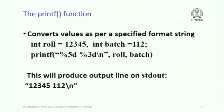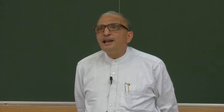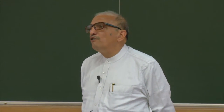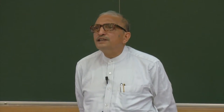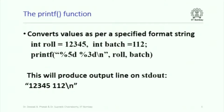Let us also discuss two functions used to analyze text input in a formatted fashion and to create formatted output. These are the traditional functions from the C programming language which continue to exist in C++. The C programming language did not have any input/output instructions — it did not have operators like cin and cout — so everybody used only these functions. The printf function converts values as per a specified format string and produces output on stdout.